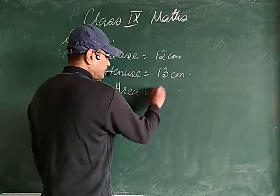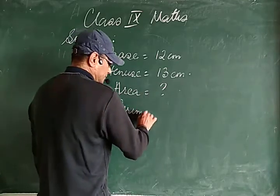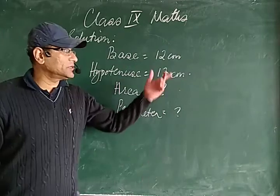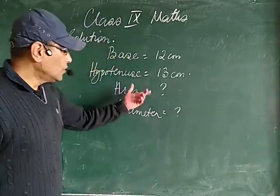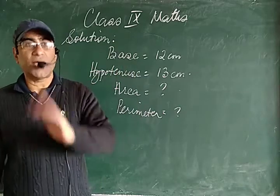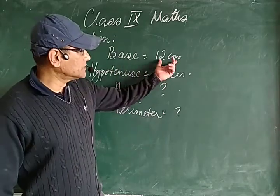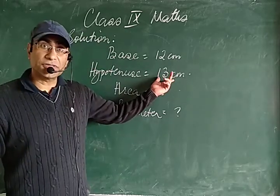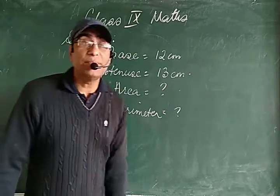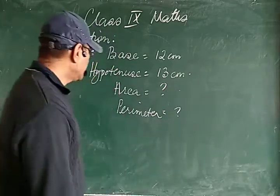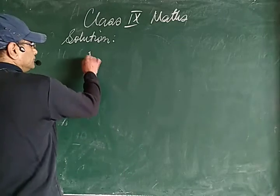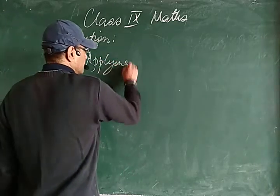We need to find the area and perimeter of the triangle. The formula for area of a right angle triangle is half times base times height. We know the base but we don't know the height — that has to be found first. Instead of height, we are given the hypotenuse, so let's find the height first by applying Pythagoras's theorem.